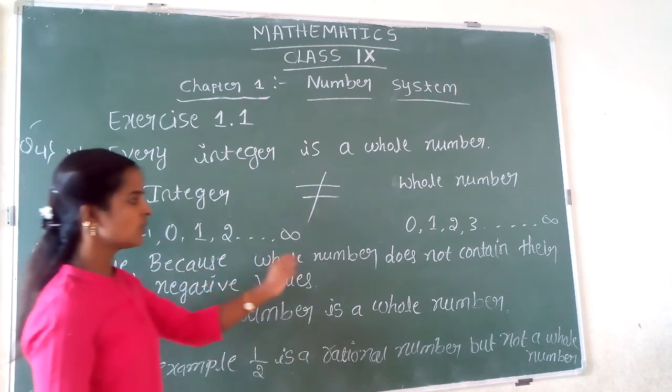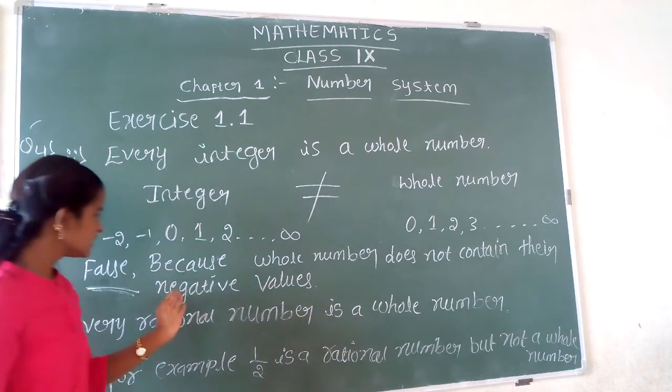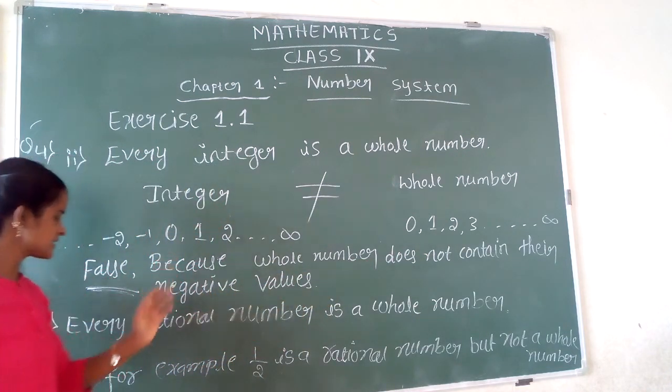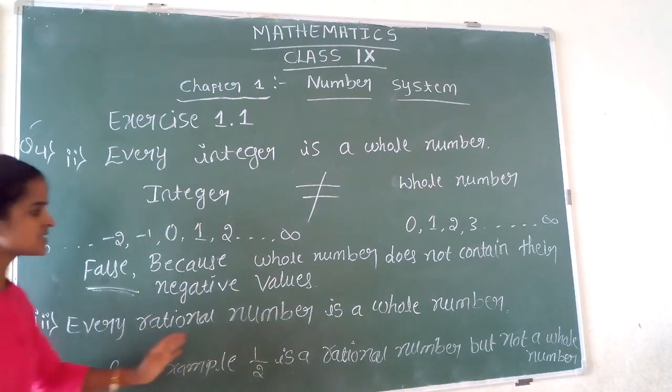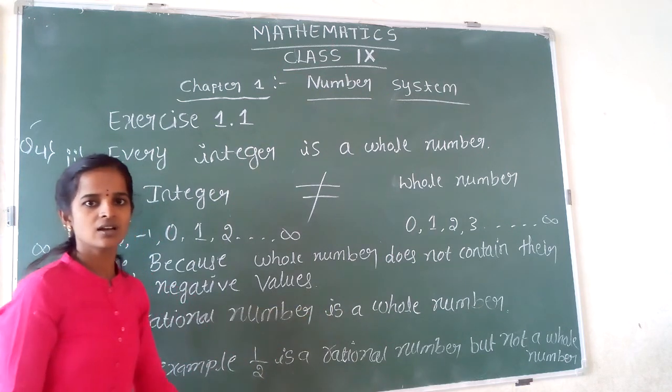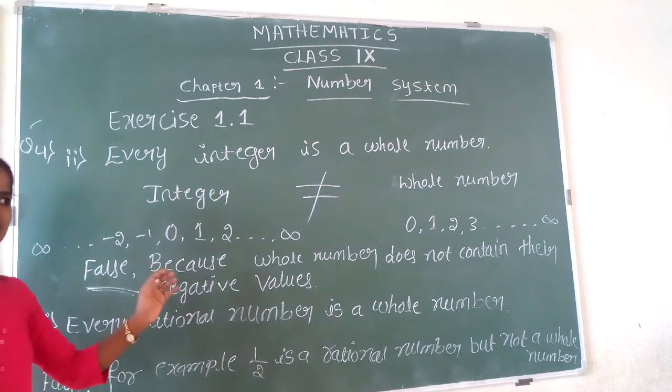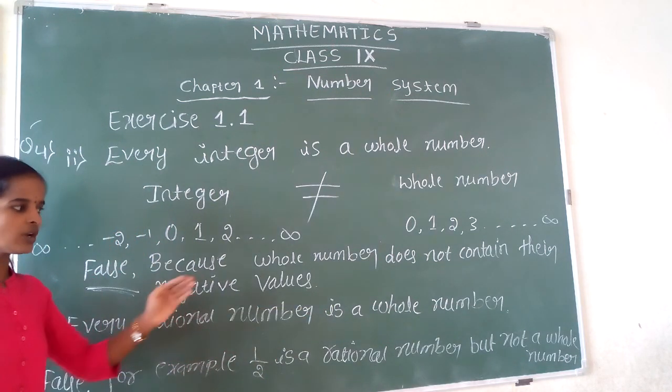Because whole number does not contain negative values. Next, every rational number is a whole number. We already know rational number - rational number is P by Q. Whole number starts from 0,